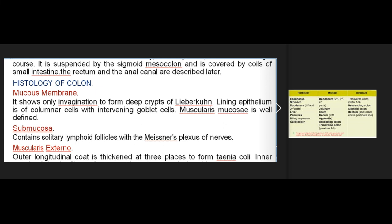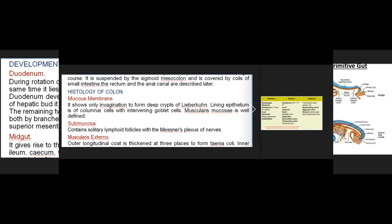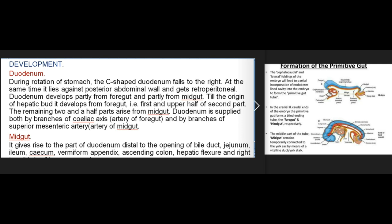Histologically, the mucous membrane of the colon shows only invaginations forming deep crypts of Lieberkühn. The lining epithelium consists of columnar cells with intervening goblet cells. The muscularis mucosae is well defined. The submucosa contains solitary lymphoid follicles with the Meissner's plexus of nerves. The muscularis externa has an outer longitudinal coat thickened at three places to form the tenia coli, and an inner coat of circular fibers. The outermost layer is serous or adventitia.